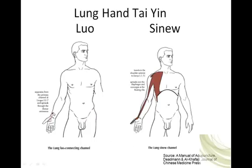Let's see our Luo-connecting channel, leaving Lung 7, just proximal to the styloid process of the radius, spreading out through the thenar eminence, where there's going to be a deep connection. So you turn the hand over — the other side is the Yuan source point of Large Intestine channel of Hand Yang-ming, Large Intestine 4.